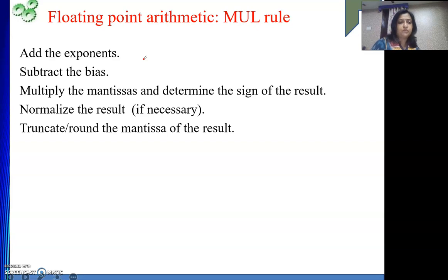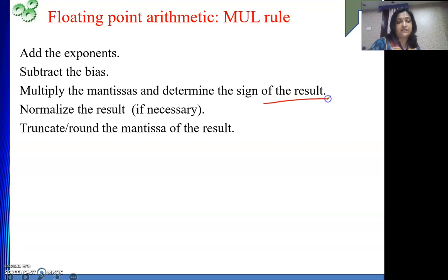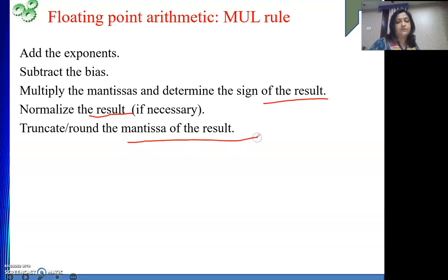We add the exponents because we are adding excess twice, so we need to subtract it once. Multiplication is much easier after that: multiply the mantissas and determine the sign of the result. Then normalize the result if required and truncate or round the mantissa of the result.